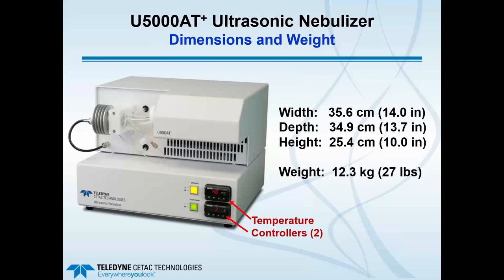A front view of the base ultrasonic nebulizer — this is the U5000 AT+, which has been widely used for many years for aqueous samples, particularly for things like drinking water and wastewater. You can see on the right-hand side the width, depth, and height dimensions. It's very much a benchtop-style unit that can be placed next to the ICP or on a laboratory cart. One important detail is the two temperature controllers in the lower right: the top one is for the heater, and the bottom one is for the cooler, which cools the condenser.